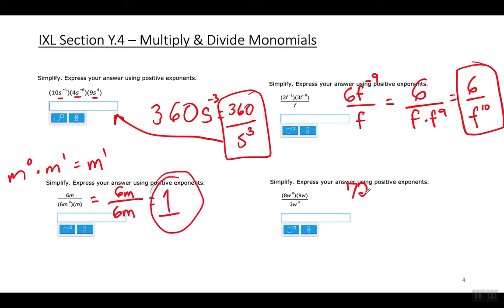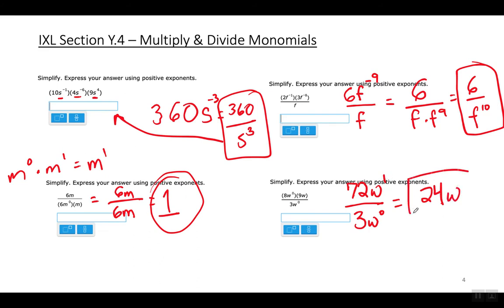On the top: 72w over 3 times w to the zero power. 72 divided by 3 is 24, and w to the first power divided by w to the zero power — subtracting exponents — gives 1 minus 0 equals 1. The final answer is 24w.